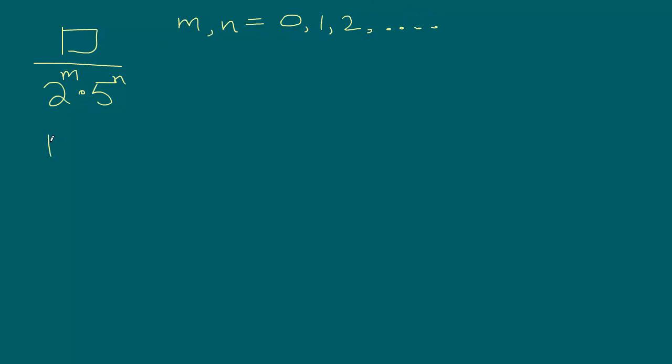So we have, let's write it over here. So our numerator times 2 to the power 0 times 5 to the power n. So then this number will look like the numerator by 2 to the power 0 is 1. So 1 times 5 to the power n will be simply 5 to the power n.